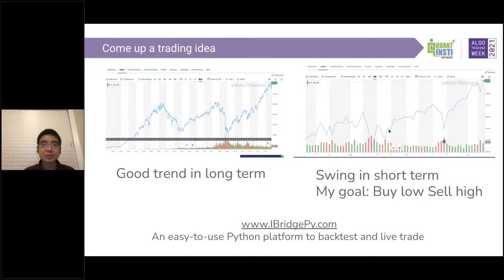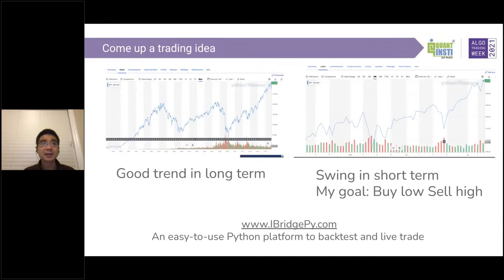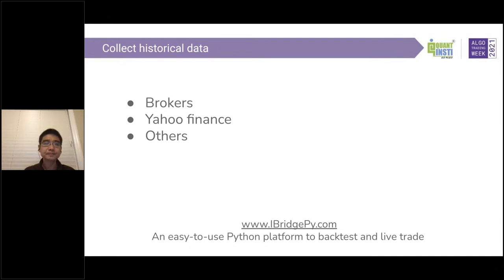The next step is to collect historical data and then verify my trading idea. To collect historical data, there are multiple choices. You can go to brokers — for example, Interactive Brokers has pretty good historical data. Also, if you don't want to pay anything, you can go to Yahoo Finance, which is a really good data provider. There are other data providers you can use as well. Your choice depends on what data your trading model requires.